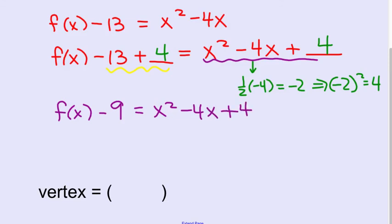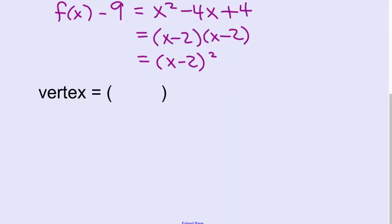Equals x squared minus 4x plus 4. Now we can factor that perfect square trinomial is x minus 2 times x minus 2 or x minus 2 all squared. We do need to move this minus 9 back over to the right. So we're going to add 9. So our function is f of x equals x minus 2 all squared plus 9. The vertex is opposite, same. Opposite, same.